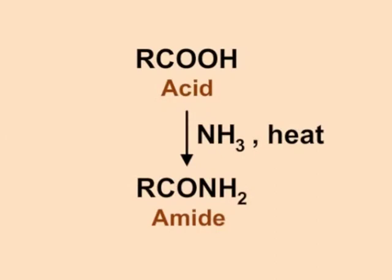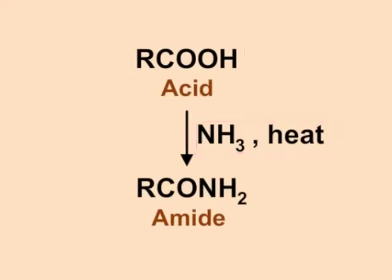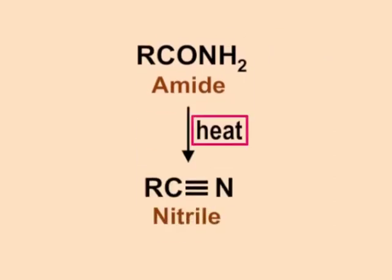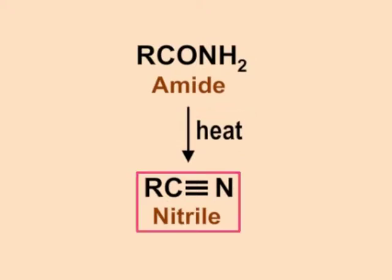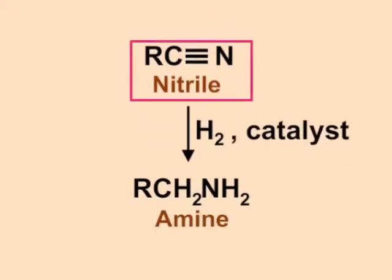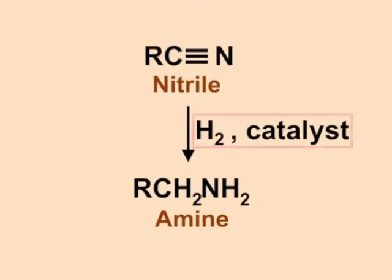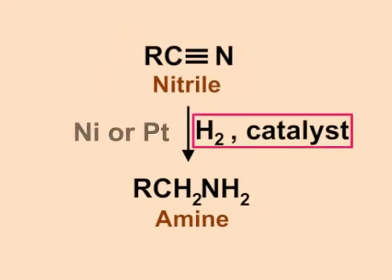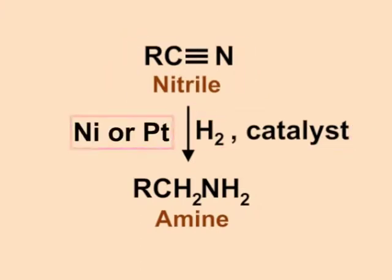Preparation of amines from acids: an acid reacts with ammonia when heated to form an amide, which on further heating forms a nitrile. The nitrile then reacts with hydrogen in the presence of nickel or platinum to form an amine.